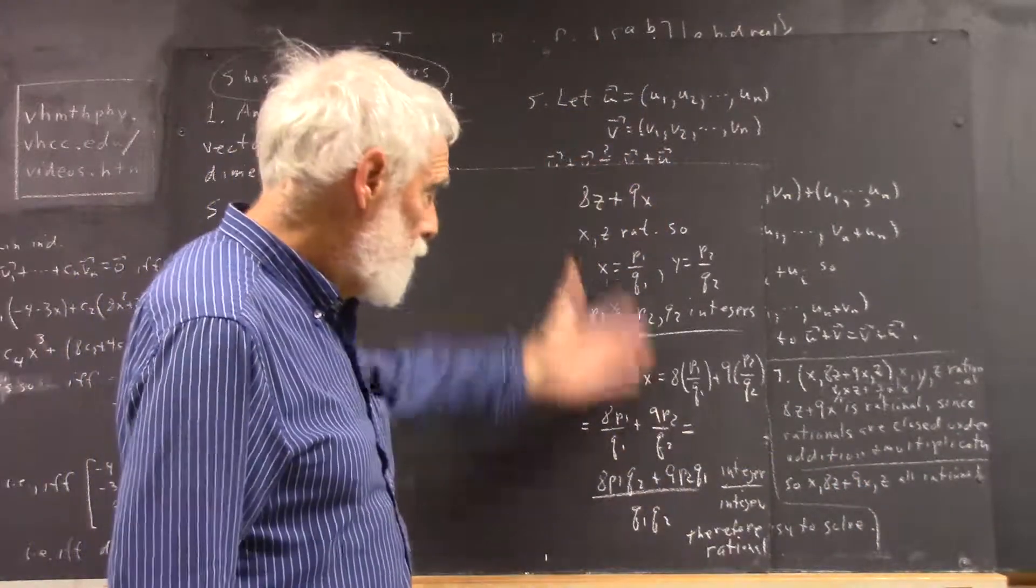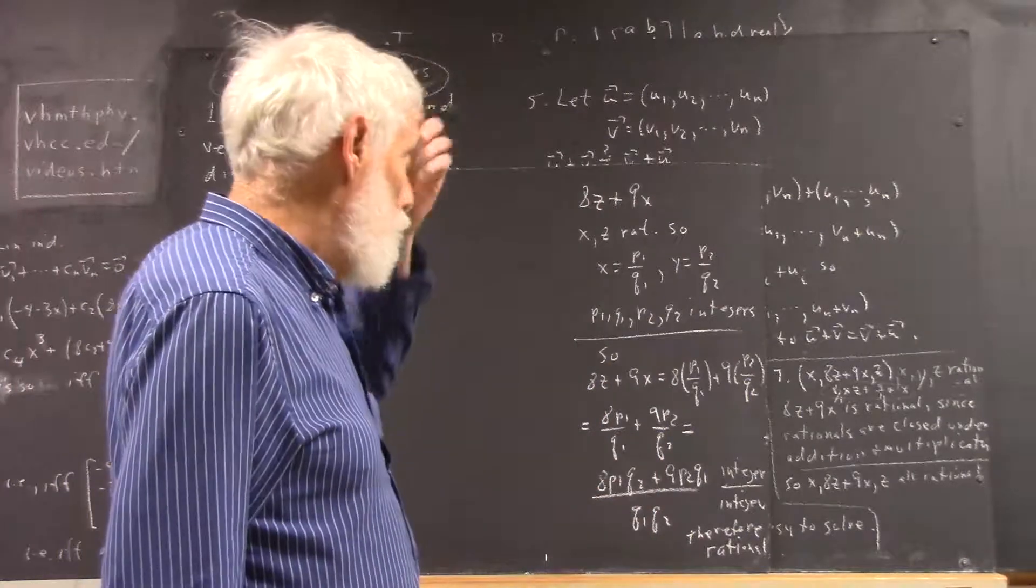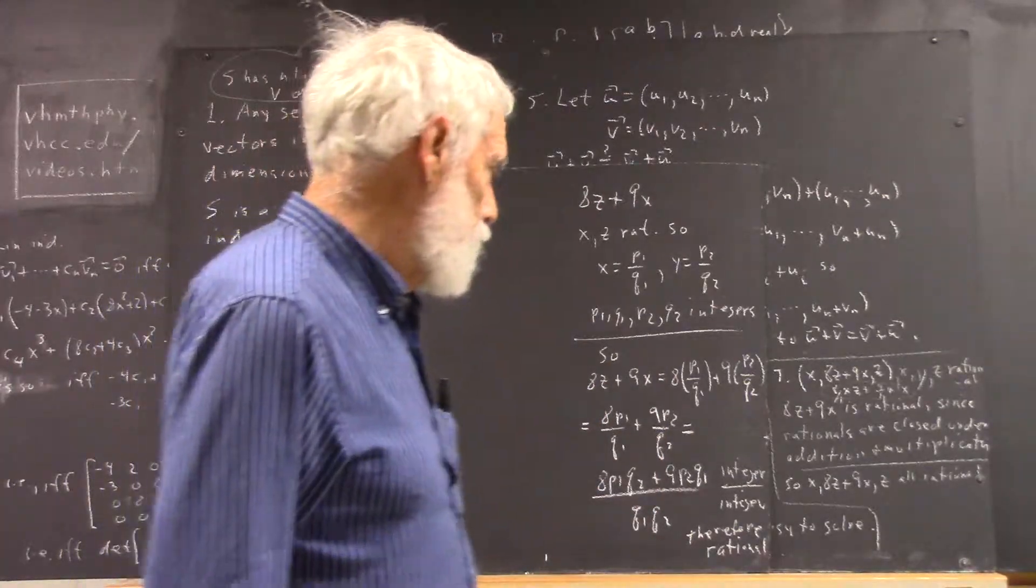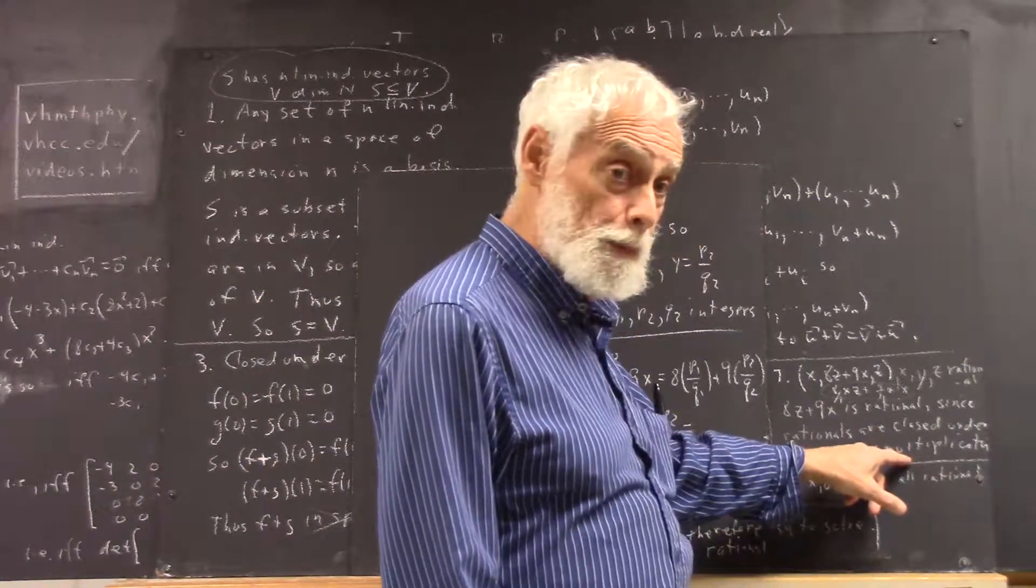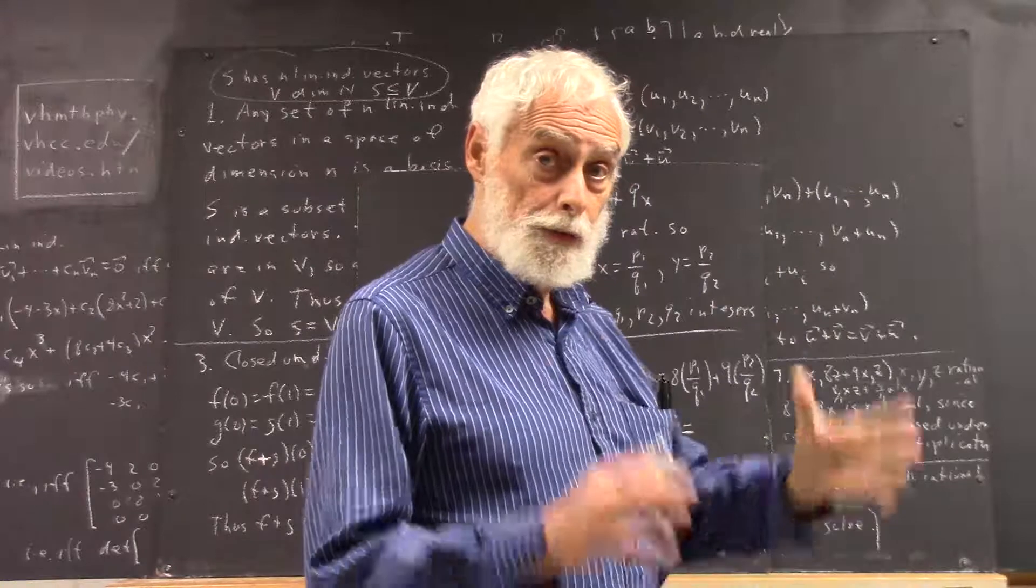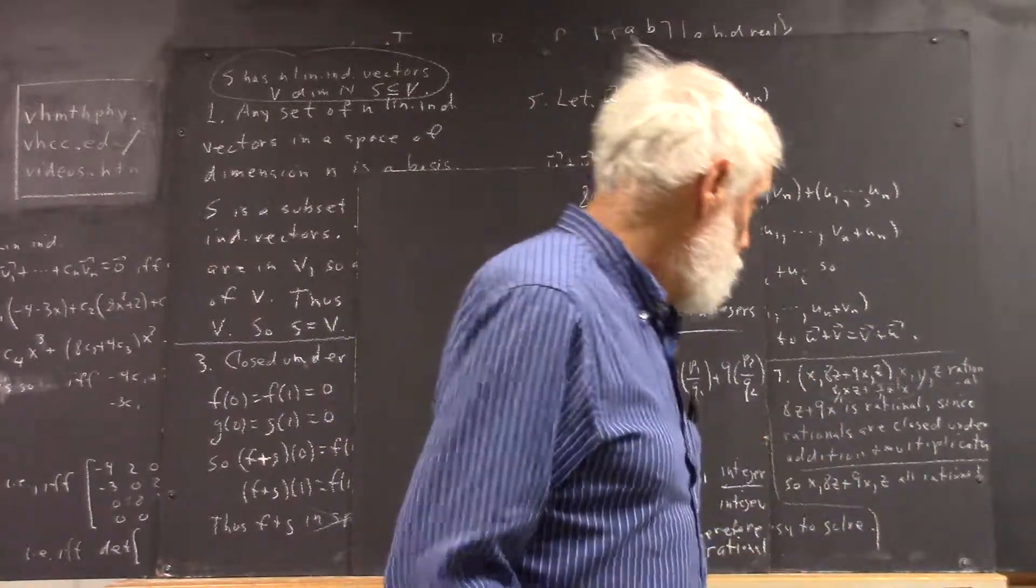And you should, ideally, be able to do this. You should be able to give me some kind of justification for the fact that the rationals are closed under addition and multiplication. If you add two rationals or multiply two rationals, you get a rational.